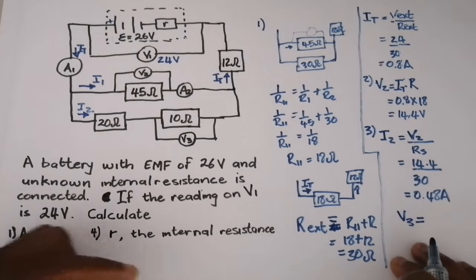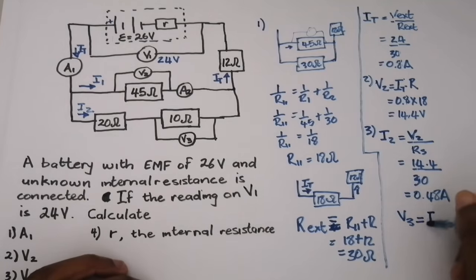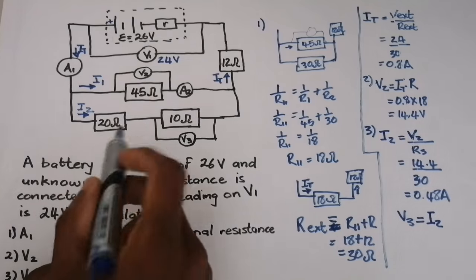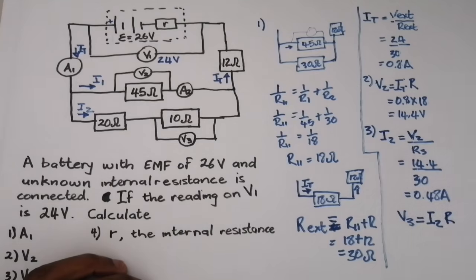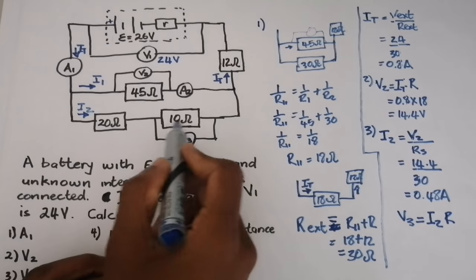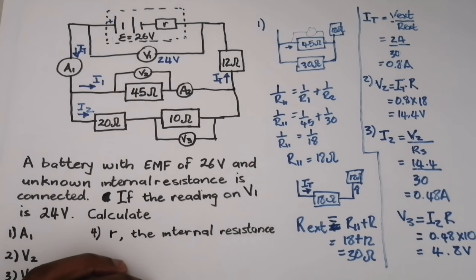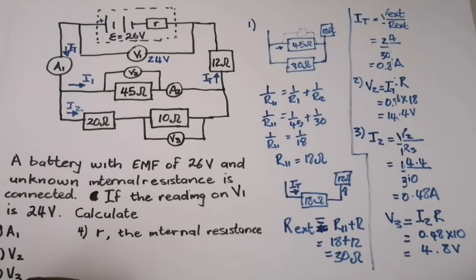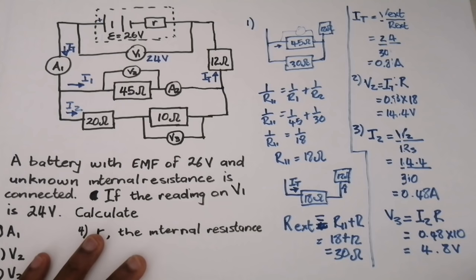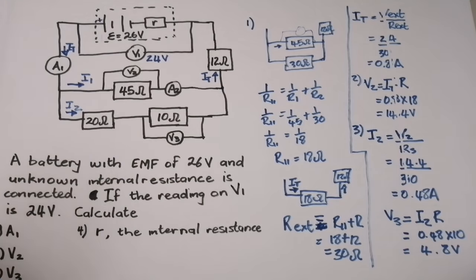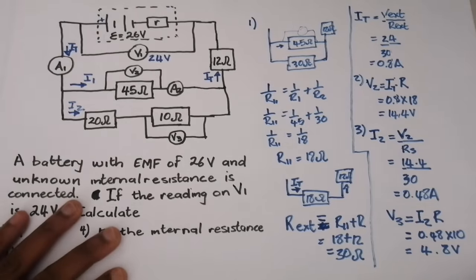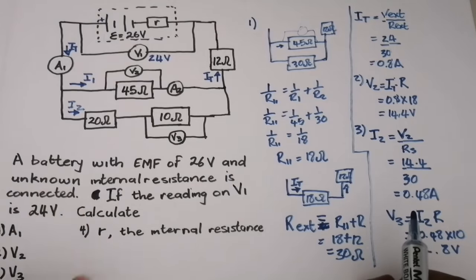Now V3 equals i2 multiplied by the 10-ohm resistance, so that's 0.48 multiplied by 10, giving 4.8 volts. Knowing the voltage across the entire series combination (14.4 V) and the voltage across one resistor (4.8 V for the 10-ohm), we could also find the voltage across the other resistor. That covers V3.